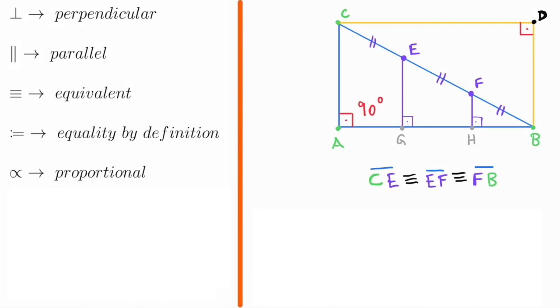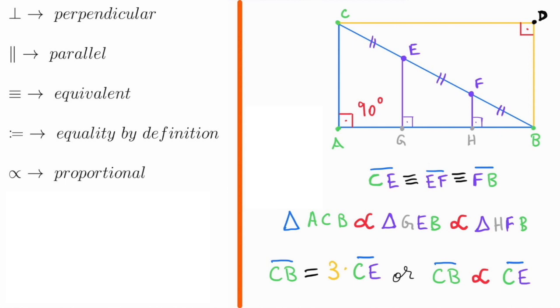Next, we have the symbol of proportional. And we see that in this example, the triangles ACB, GEB, and HFB are all proportional to each other. We also notice that the side CB is three times longer than the side CE, implying that the side CB and CE are proportional to each other, since the length of one divided by the other results in an integer number.